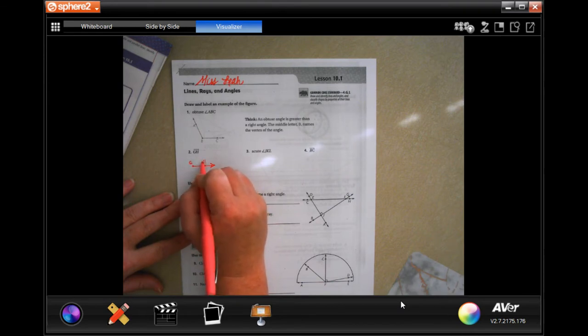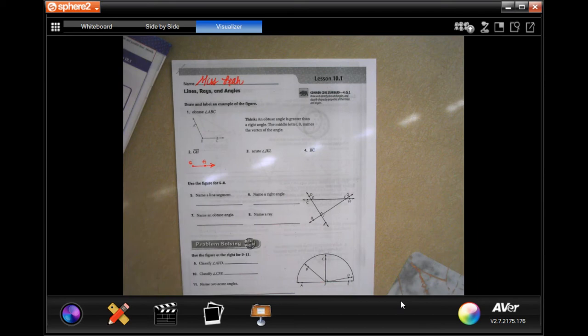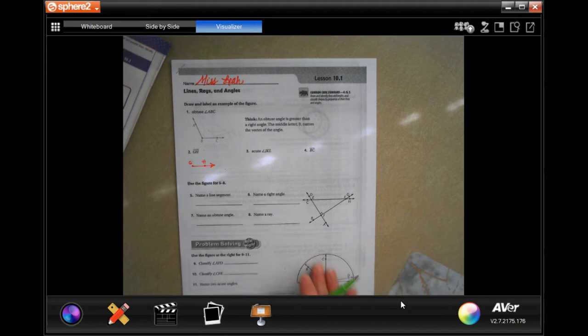Then we're going to label G and H. Super easy. Don't make it harder than it's gotta be. Now we need an acute angle. There are three ways: acute, obtuse, and a right angle. A right angle always has that little box.